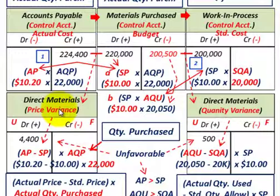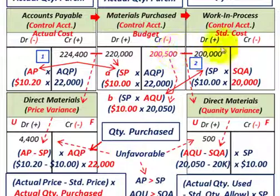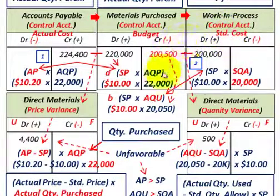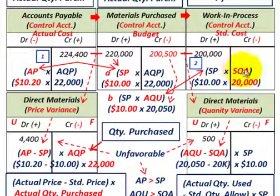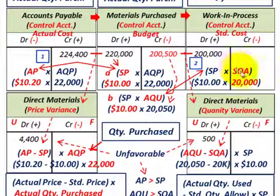When we actually use those materials, we take them out of our materials purchase control account and move them into work-in-process control at the standard cost allocated for the project. They come out at the actual quantity used, but compared to the standard quantity allowed for the specific project based on standard costing. The difference between our actual quantity used and the standard quantity allocated is our direct materials quantity variance.